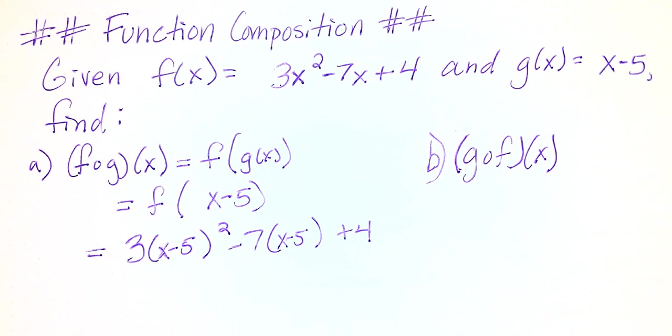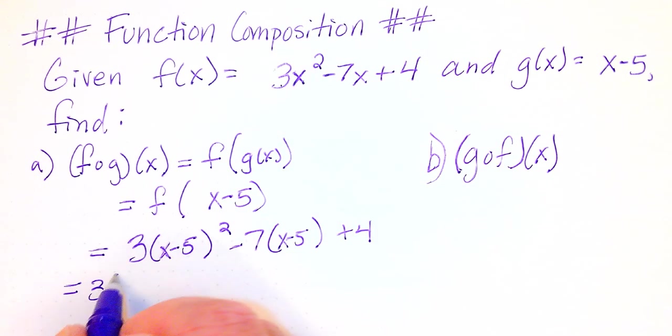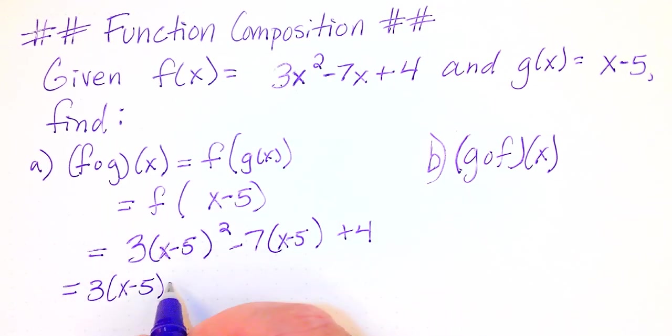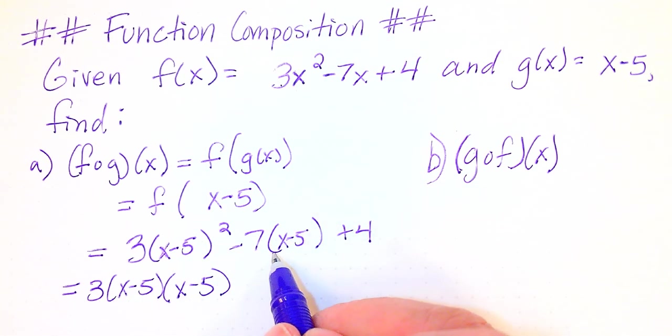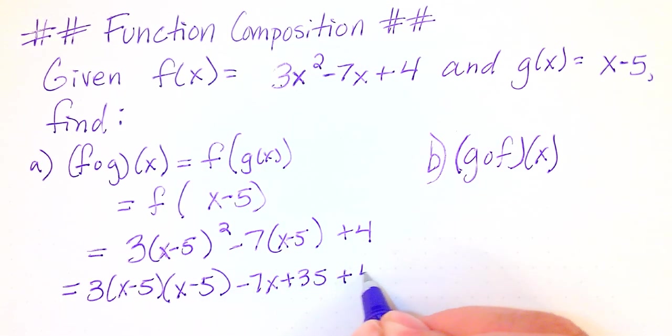So now I've got to rewrite this and obviously I don't want to leave it in this form. We need to simplify this so 3 times x minus 5 all squared needs to be written twice. We're going to rewrite this as 3 times x minus 5 times x minus 5 and then we're going to go ahead and distribute the negative 7, that's going to be negative 7x plus 35 and then plus 4.